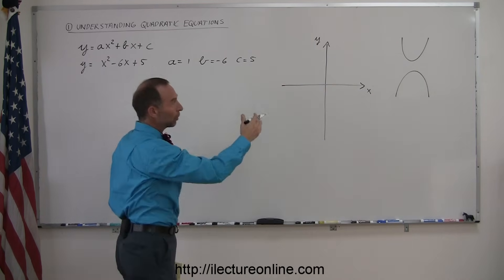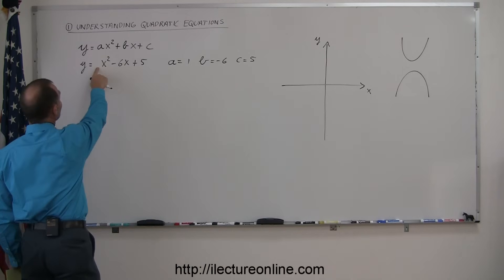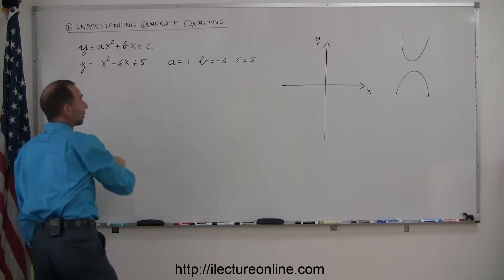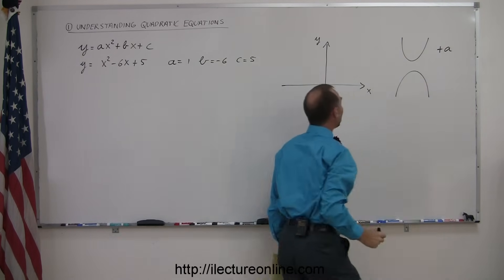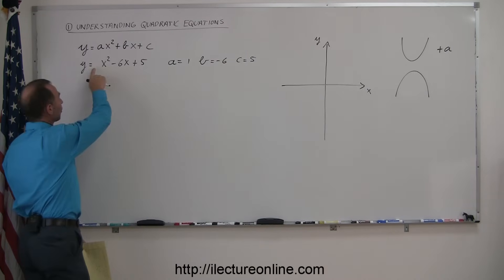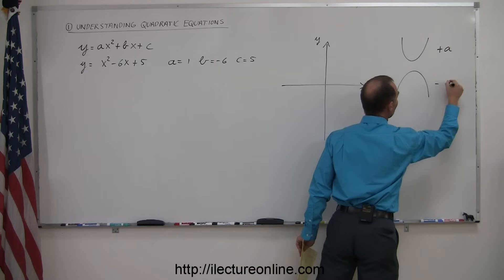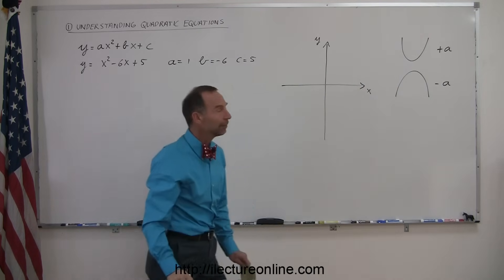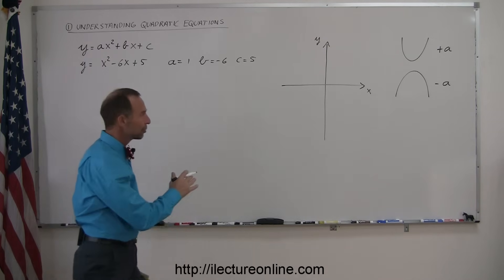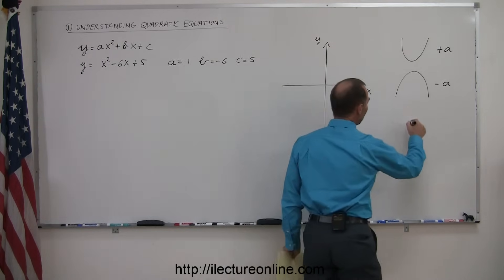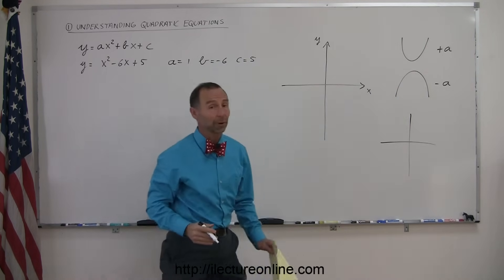A quadratic equation will be graphed either opening upward or opening downward. The way you can tell is: if the number in front of the x squared term is positive, it'll open upward — that's a plus a. If the number in front of the x squared term is negative, it'll open downward — think of that as a minus a. These graphs for a quadratic equation are called parabolas.